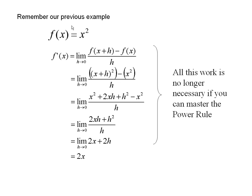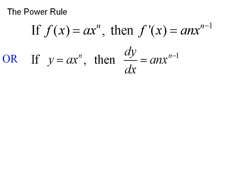You'll remember our previous example. To find out the derivative of x squared, we had to do all this to find out it's 2x. We don't need to do any of that anymore because we know the power rule. See, this is x squared — it becomes 2x to the 1. Everything else works like that.